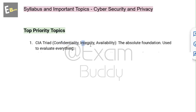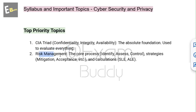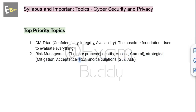— Confidentiality, Integrity, and Availability — which is the absolute foundation used to evaluate everything. The second top priority topic is Risk Management, which covers the core process: identify, assess, and control strategies such as mitigation and acceptance, as well as calculations like SLE and ALE.